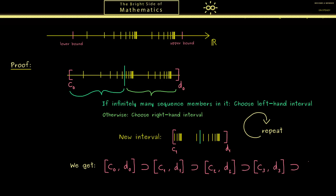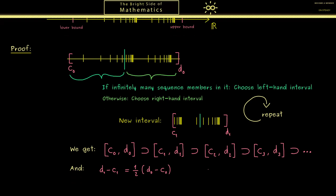Hence we have this inclusion as often as we want. Now the point of this statement is that the length of the interval gets smaller and smaller in each step. In particular, if we calculate d1 minus c1, we get one half of the original distance because we bisected the interval.